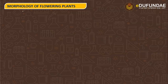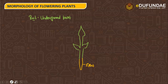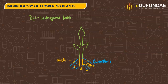Root is the underground part of the plant that is present below the ground. The structure of root consists of a primary root, along with several lateral roots. On the lateral roots are present root hairs, which help in the absorption of water and minerals from the soil.